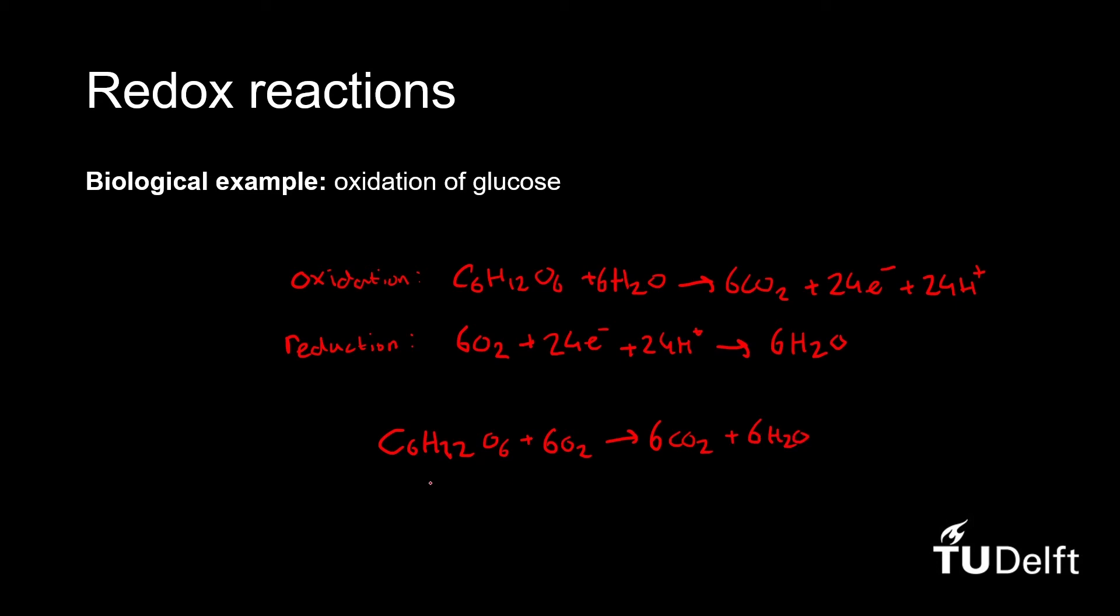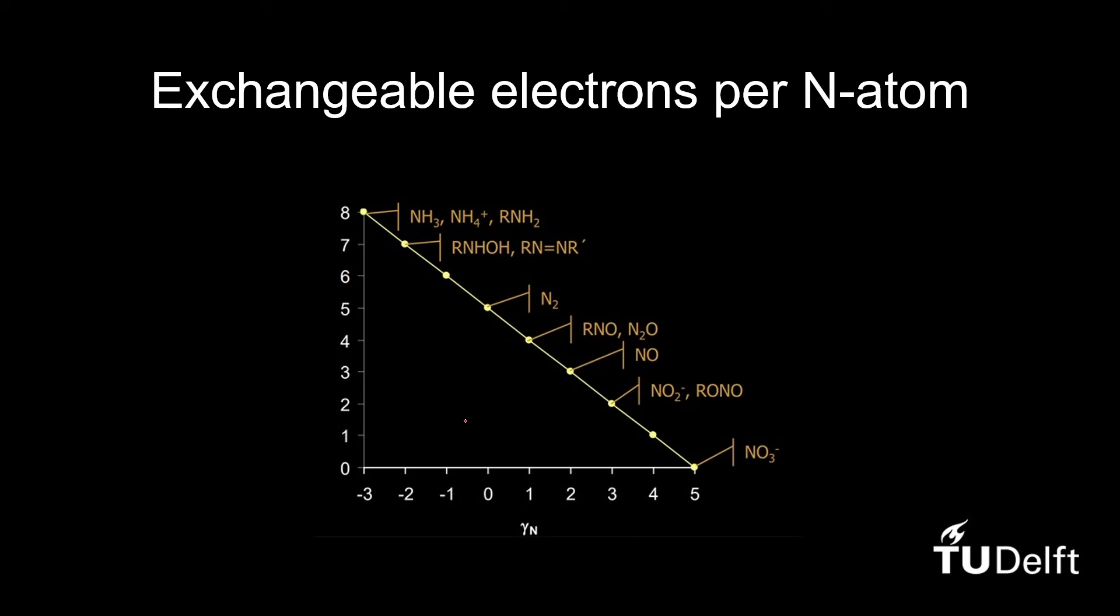Now we have seen a biological example of a redox reaction. Let's have a look now at the exchangeable electrons per nitrogen atom. In this graph, we see different compounds of nitrogen and the reduction state that they are in.